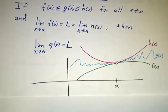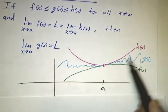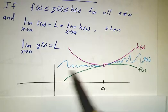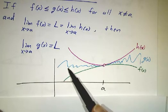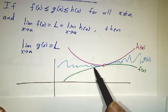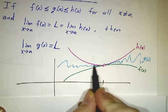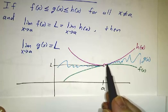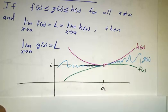Here's a picture of the theorem. We have our function f at the bottom and our function h at the top, and they both have the same limit as x approaches A. The function g — we don't know anything about g. It could have some horrible formula where there's no hope of doing anything algebraic with it. But as long as we know that it's between f and h, then f and h are both getting closer and closer to L, and g is squeezed between them and also has to approach L.